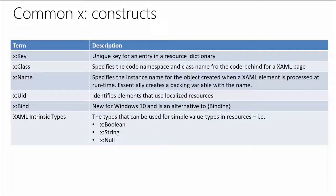X:Key and X:Name are friends of each other but don't do the same thing precisely — a common source of confusion. X:Name represents the actual field value in the code-behind. If you have a class declared inside your XAML and give it an X:Name, it gets a field you can reference in code-behind. For example, if you gave a Grid an X:Name of 'myGrid,' in code-behind you could go 'myGrid.' to access its properties and methods.